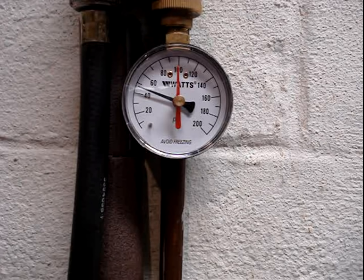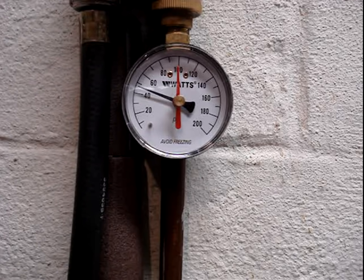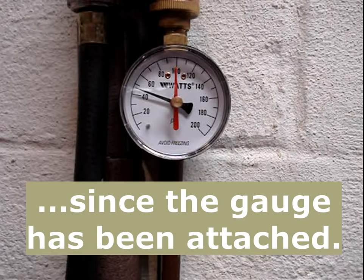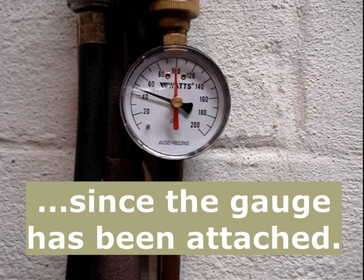The municipal pressure is normally about 90 pounds, and it's being reduced to around 50 pounds by the water pressure reducing valve. Ten minutes has passed, and the water pressure is staying steady, just a little bit below 50 pounds.